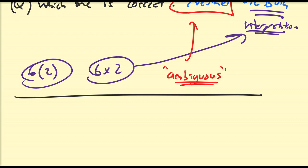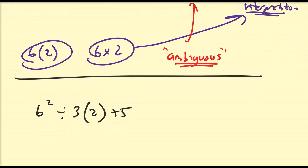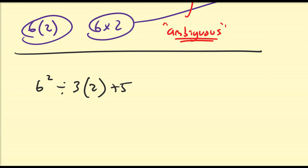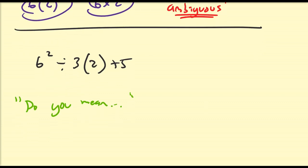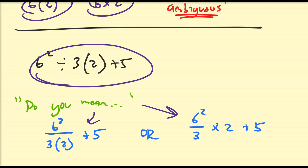So somebody were to ask this problem, six squared divided by three parentheses two plus five. So you actually should ask them, because if you say one or the other, they're going to be like, oh well, you don't know order of operations. Or maybe you should study it again, which typically is not the case. So you should actually ask, do you mean, so we have two variations that are actually not ambiguous at all, namely six squared over three, two plus five. Or do you mean six squared over three times two plus five? So which one of these do they mean? So ask them, do you mean the first one or do you mean the second one?